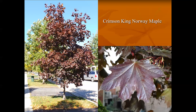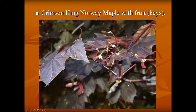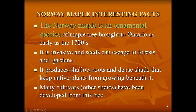Crimson King Norway maple will probably not be on the test, but if it is, it's the same as Norway maple except for the color and the sharp points along the edges. Crimson King Norway maple has small seeds with red coloring and whitish or beige coloring on the other part. Norway maple is an ornamental species brought here in the 1700s and is invasive, spreading quickly into natural areas.